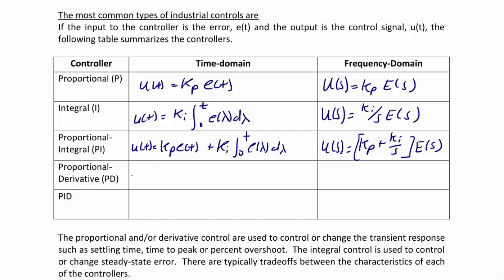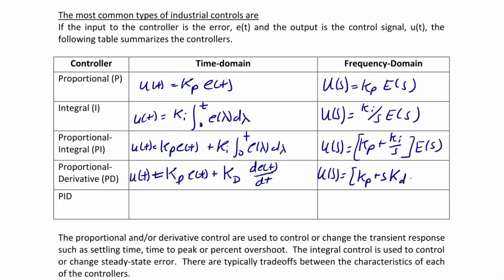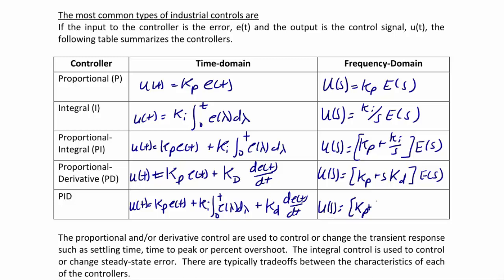Proportional derivative is the sum of the proportional controller plus the derivative controller: U(T) equals KP E(T) plus KD times the derivative of E(T) with respect to T. In the frequency domain, U(S) equals KP plus S times KD, times E(S). The PID proportional integral derivative controller gives U(T) equals KP E(T) plus KI times the integral from 0 to T of E(lambda) d-lambda, plus KD times the derivative of the error. So U(S) equals KP plus KI over S plus KD S, times E(S).